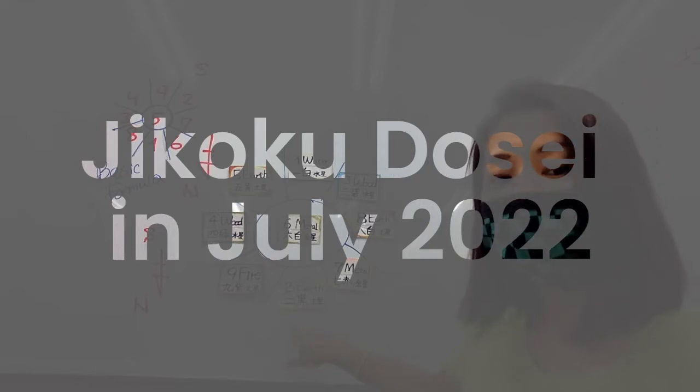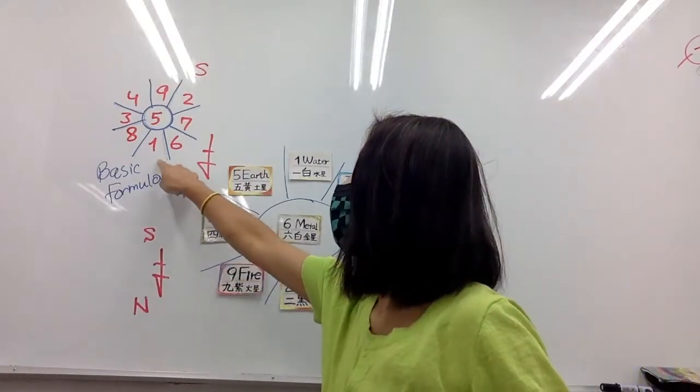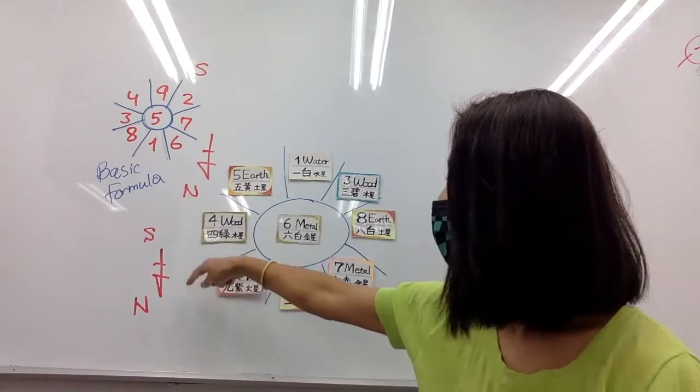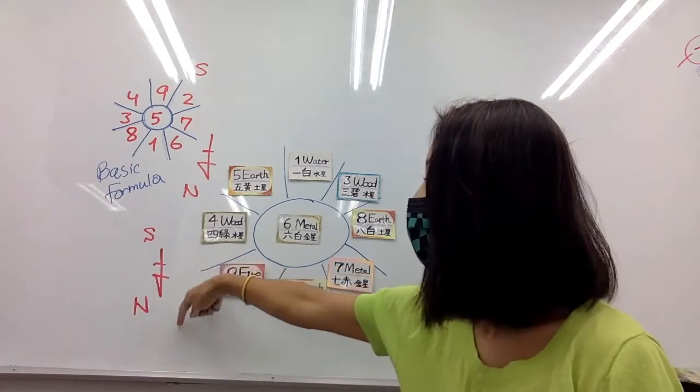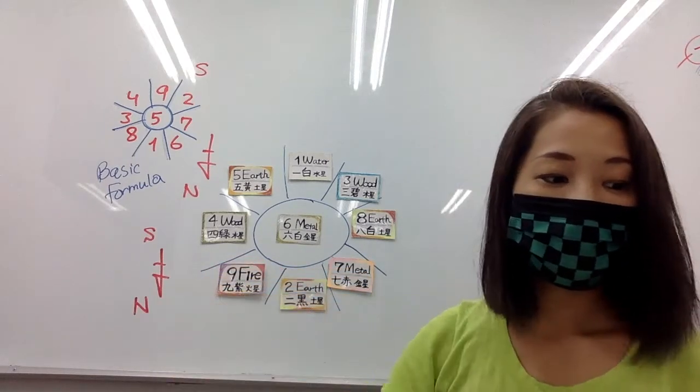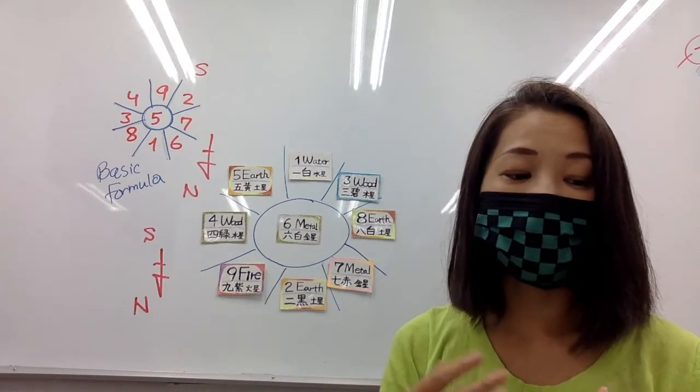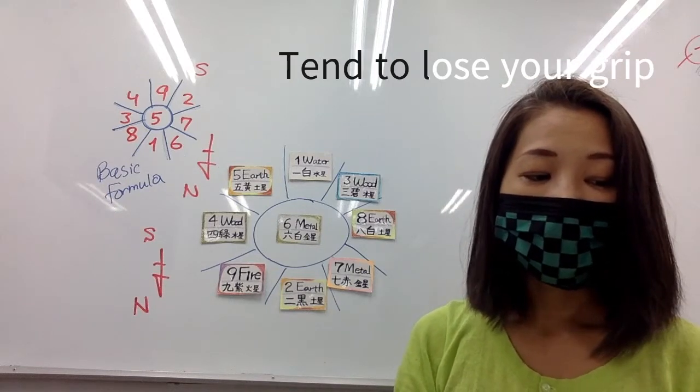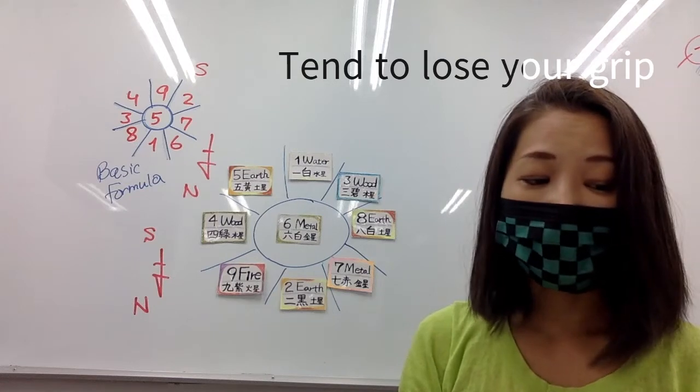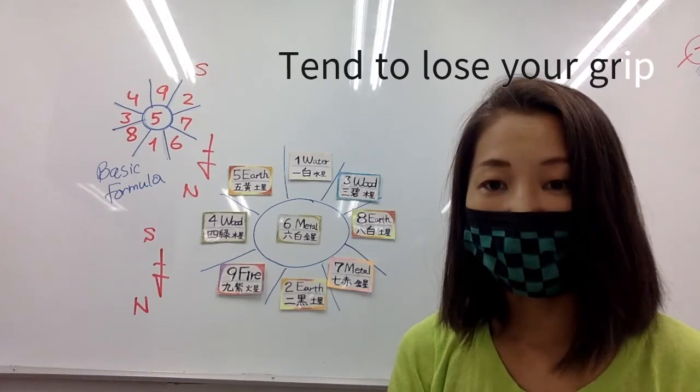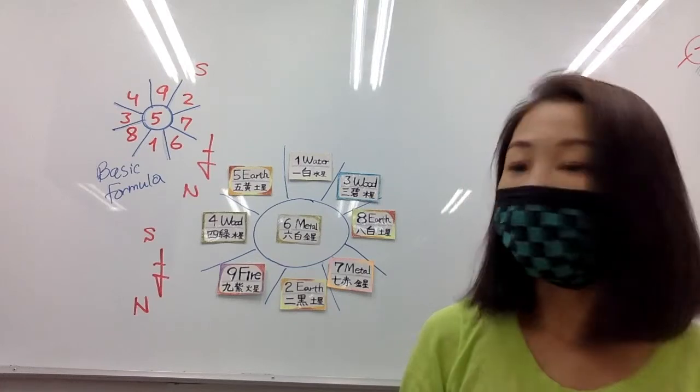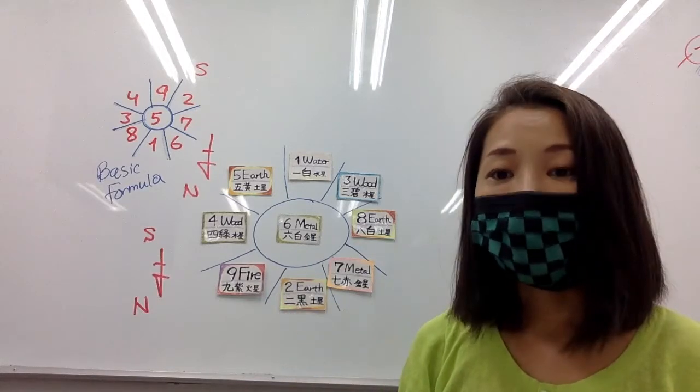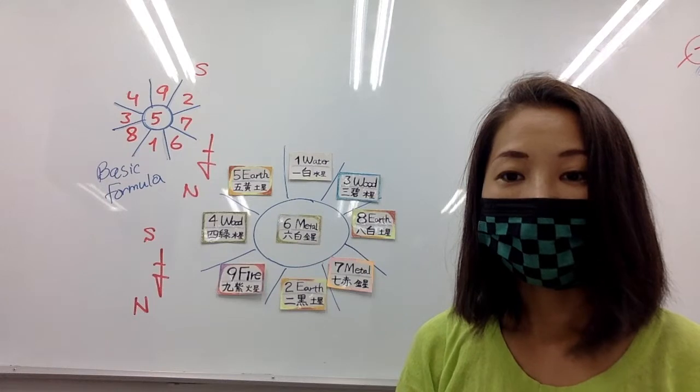So, Jikoku. Two Earth, Jikoku Dosei is on the Ipaku. So it's Jikoku in the north, so it's very likely to lose your grip. Very, very easy to be getting sick in July especially. Your vitalism is way below. So don't move. This is a must.